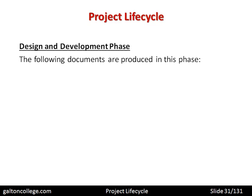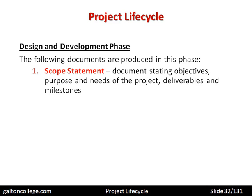The following documents are produced in the design and development phase. First, a scope statement — a document stating the objectives, purpose, and needs of the project, including the deliverables and milestones. The scope document clearly states what the project should produce at the end. It is a very important document because it defines the expected outcomes.